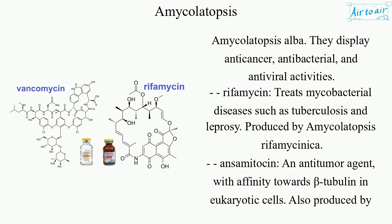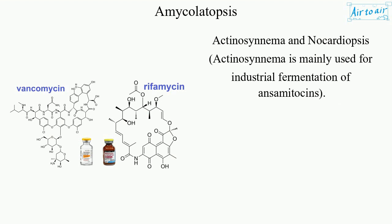Ansamitocin is an anti-tumor agent with affinity towards beta-tubulin in eukaryotic cells. It is also produced by Actinosynnema and Nocardiopsis. Actinosynnema is mainly used for industrial fermentation of ansamitocins.